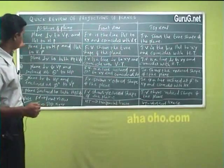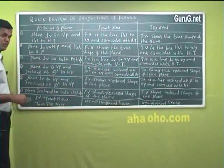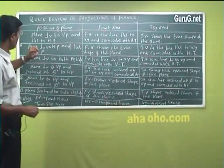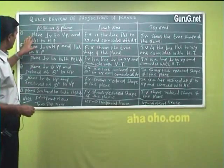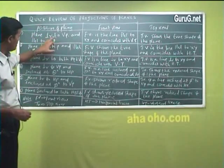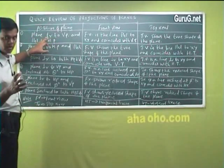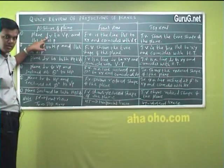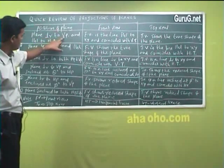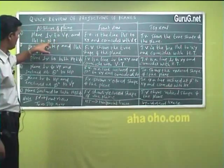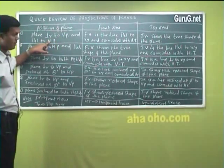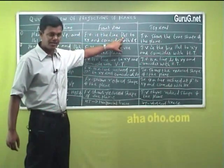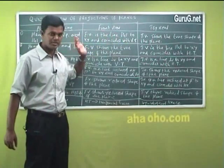There are six positions. Before going through them, I will clarify the notation: if I write ⊥ it means perpendicular, VP means vertical plane, HP means horizontal plane, and ∥ means parallel. FV means front view, TV means top view, VT means vertical trace, and HT means horizontal trace — I am just writing in short form.